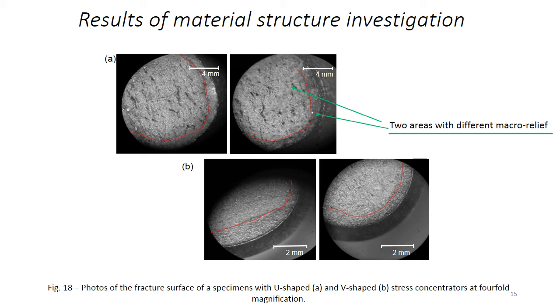Additionally, optical microscopic investigation of fracture surface of titanium grade 2 was carried out. Figure 18 shows the fracture surface of specimens with U-shaped and V-shaped stress concentrators at four-fold magnification respectively. The analysis of data presented in the figure shows the existence of two areas with a different macro-relief on the fracture surface. A red line in Figure 18 separates the areas. The circular region located near specimen surface has a relatively smooth macro-relief.